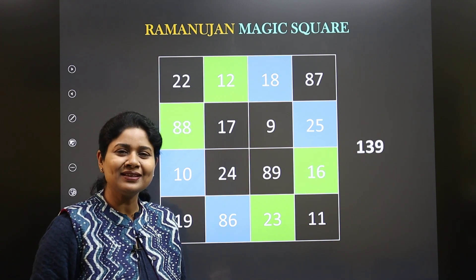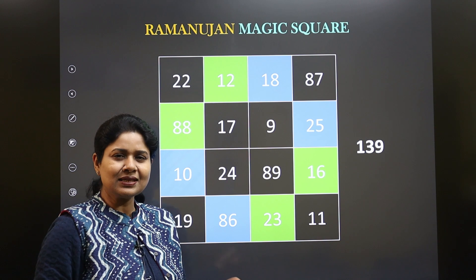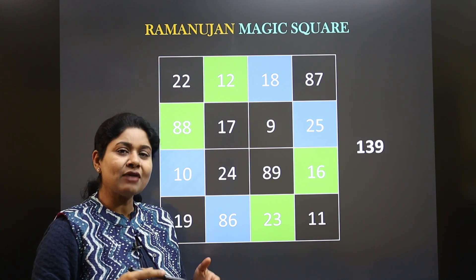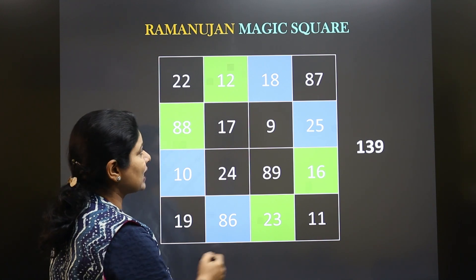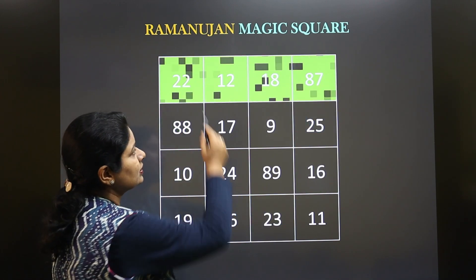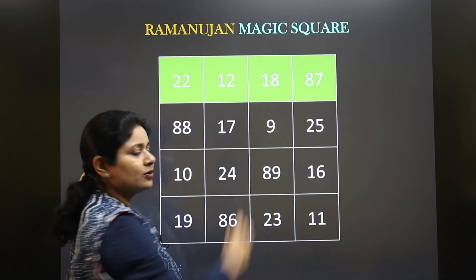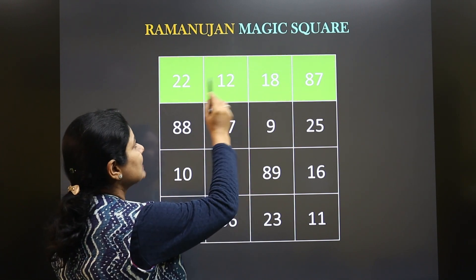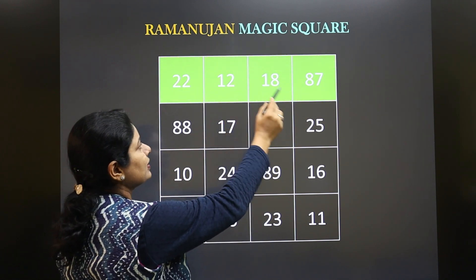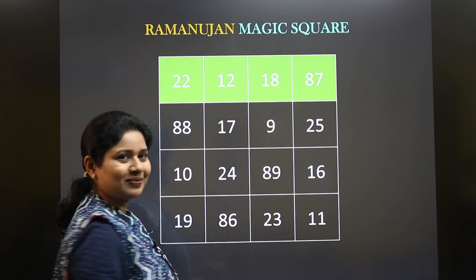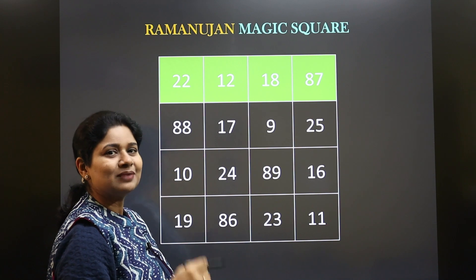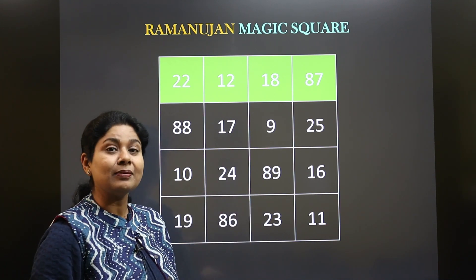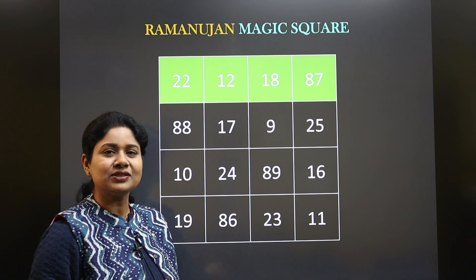You must be thinking that 139 — is this number special in some way? But what I want to emphasize here is the speciality is actually about the first row, the numbers written in the first row. It is 22nd December 1887, which is actually the birth date of Ramanujan, and that is why this is called the Ramanujan magic square.